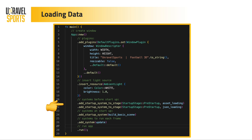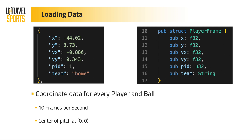We also need to load our data, so I'm adding another function, also before startup. This is what the data looks like — on the left, this is one frame of tracking data for one player: you have an X coordinate, a Y coordinate, the components of the velocity vector, the player ID, and an indication of whether the player is from the home team or away team. We load this as JSON. In Rust, you need to specifically tell Rust what sort of variables it's going to expect. Our coordinate data is at 10 frames a second, and the center of the pitch is at 0,0, which matches the game engine's center point at 0,0, so we don't need any translations.